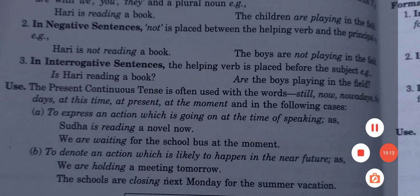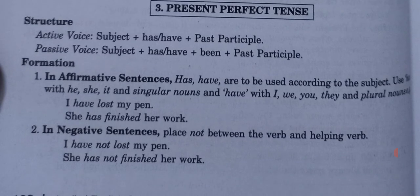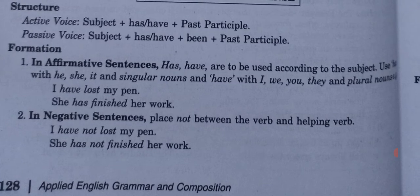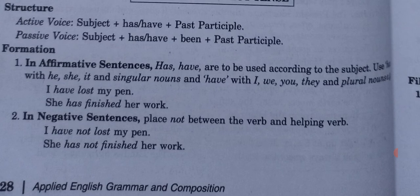Present perfect tense: structure is subject plus has or have plus third form of the verb plus object. Use has with singular (he/she/it and singular nouns), have with plural (I/we/you/they and plural nouns). In passive voice: subject plus has or have plus been plus third form. In affirmative: 'I have lost my pen'; 'She has finished her work.' In negative, place not between the auxiliary and main verb: 'I have not lost my pen'; 'She has not finished her work.'